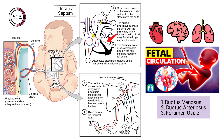The left atrial blood then flows into the left ventricle and eventually into the ascending aorta, supplying the brain, brachiocephalic trunk, and descending aorta.